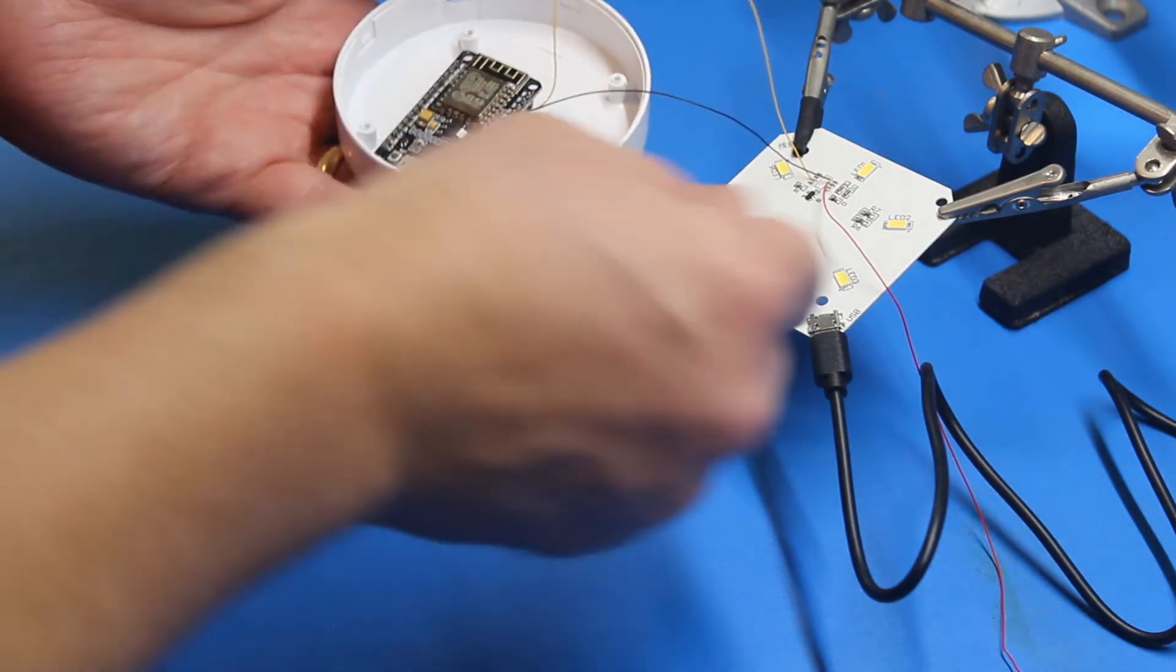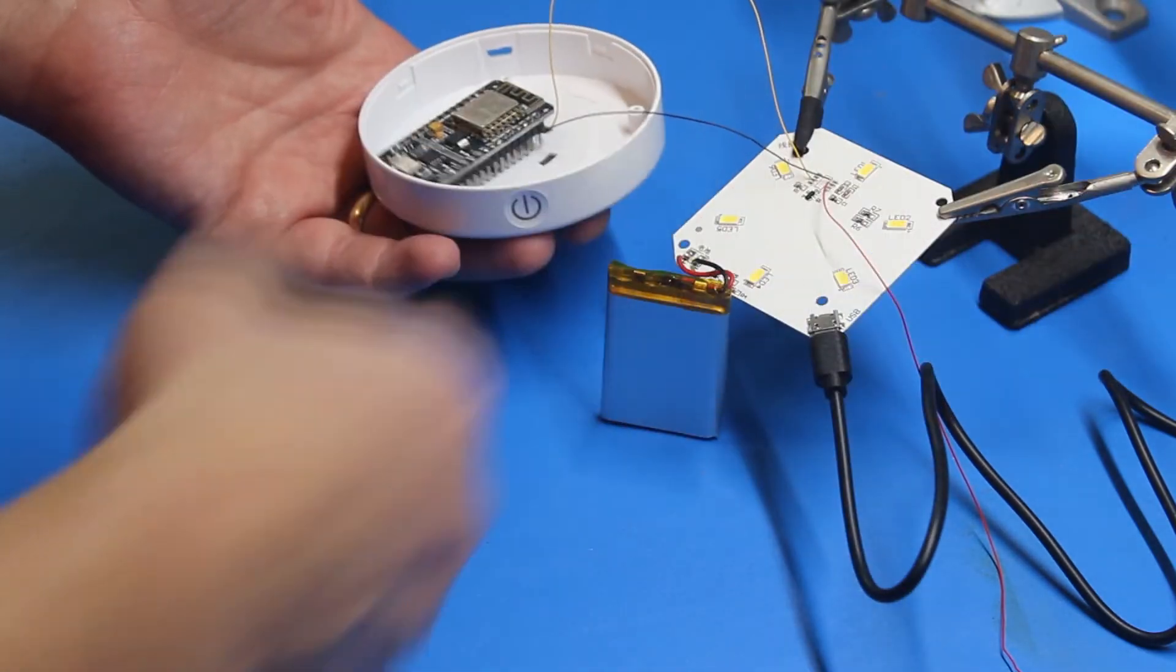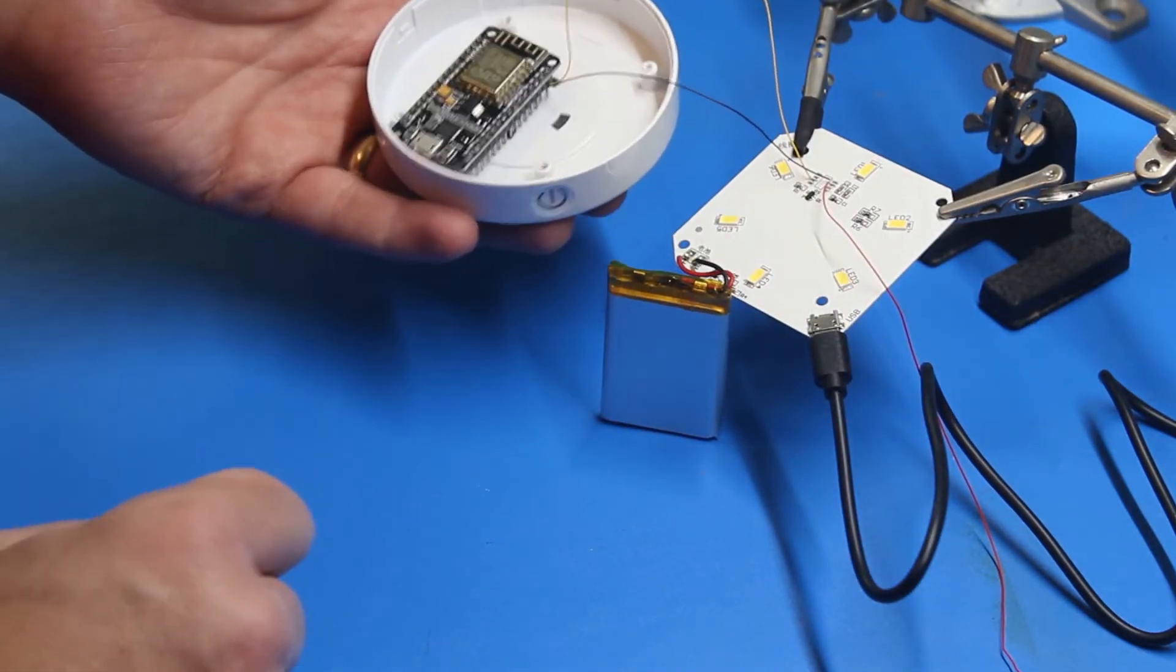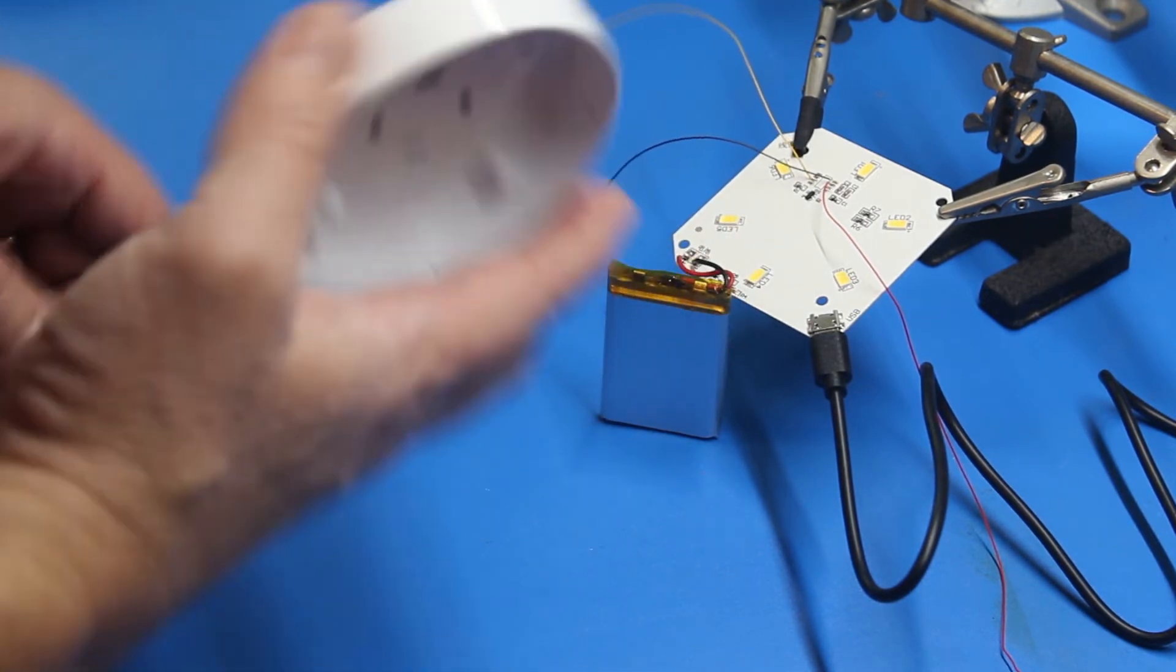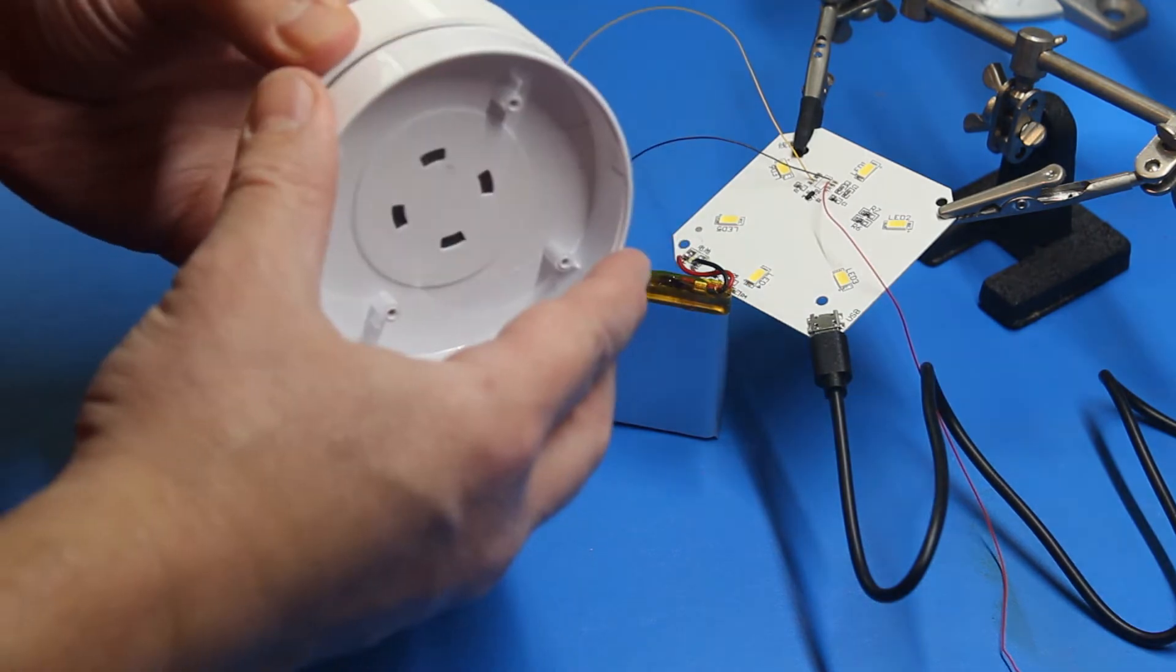The next dilemma was getting my controller inside the light casing. The controller was too deep to fit inside. I could have probably just removed the headers of the controller and crammed it in there. But instead, I decided to just 3D print an extension.